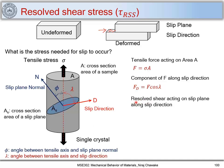Now we need to find the shear stress that causes slip — the resolved shear stress acting on the slip plane along the slip direction. This is found by dividing by the area of the slip plane A_s. So tau_RSS = F_t / A_s = F cos(lambda) / A_s.